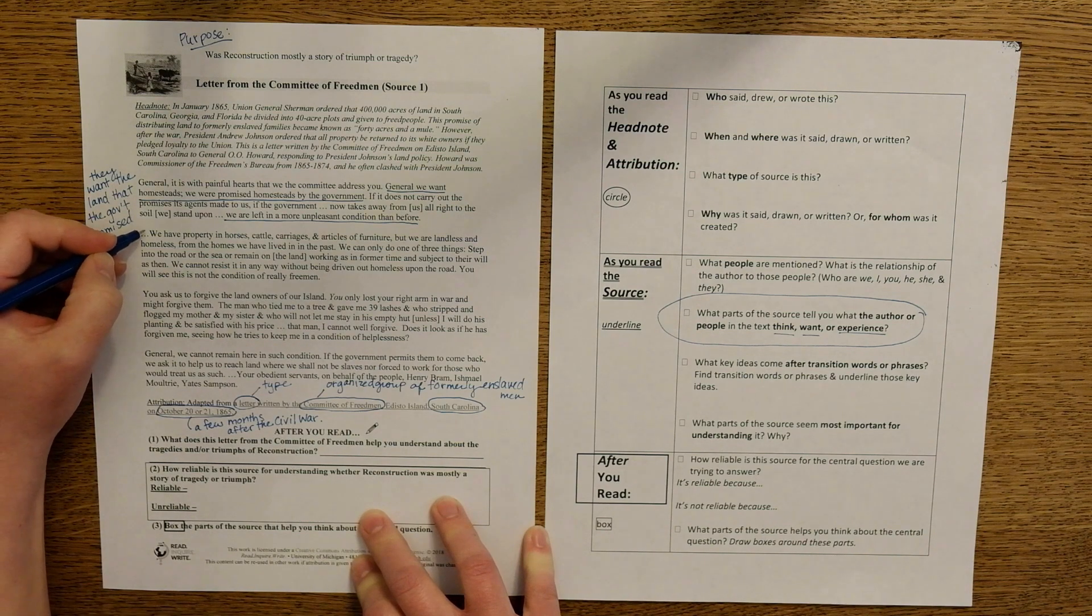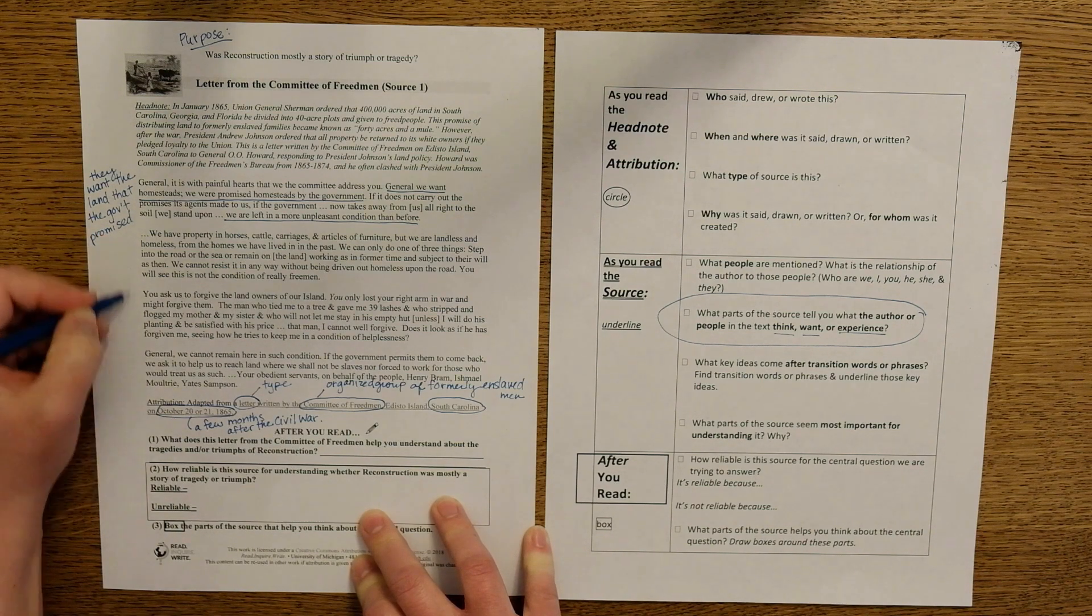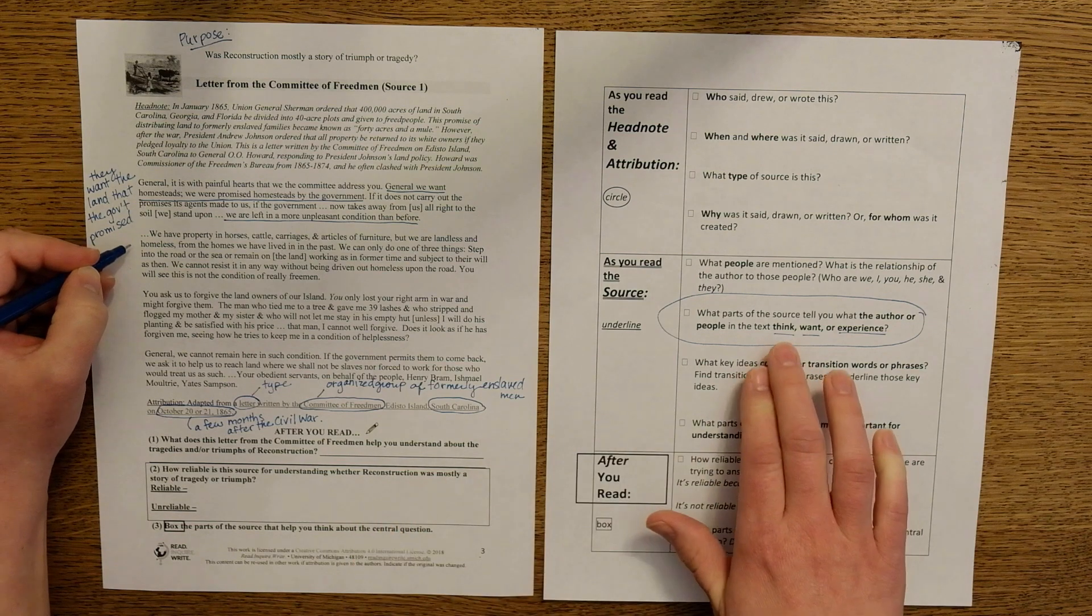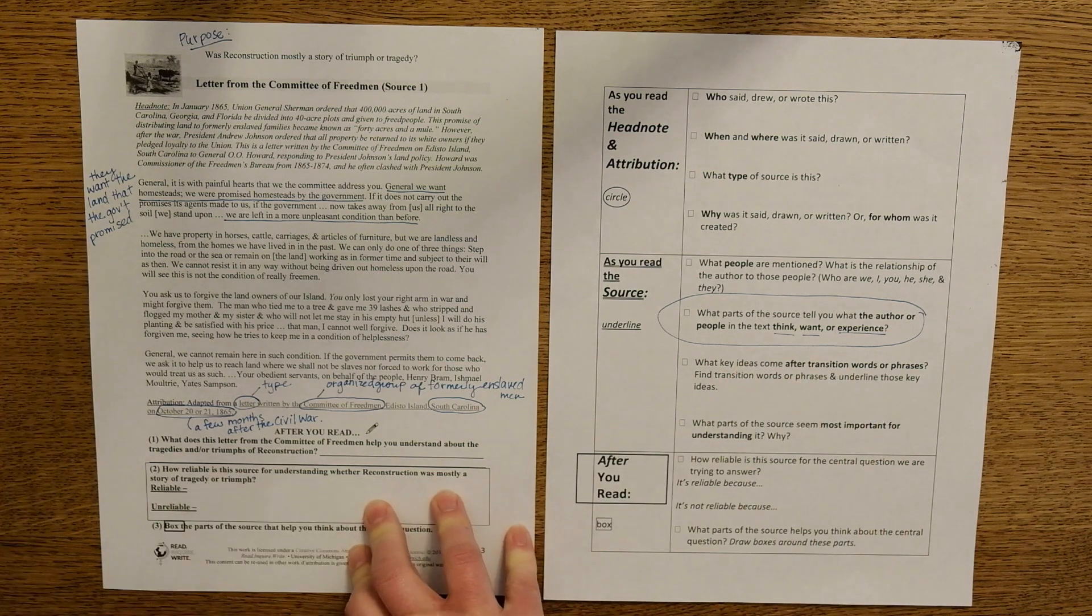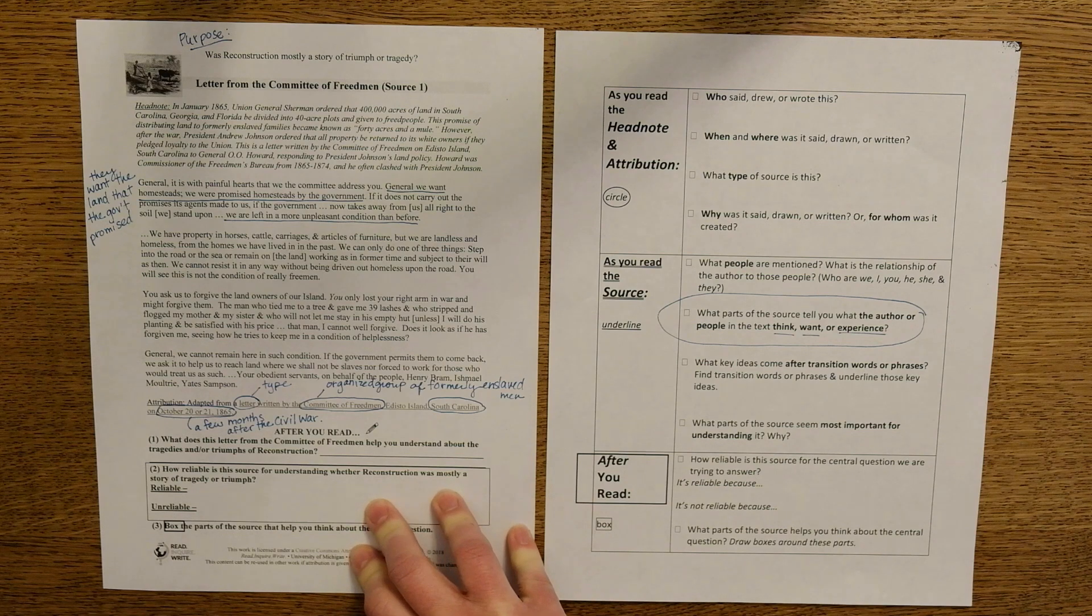With a partner, read through the middle two paragraphs and underline any additional information that tells you what the Committee of Freedmen think, want, or experience.